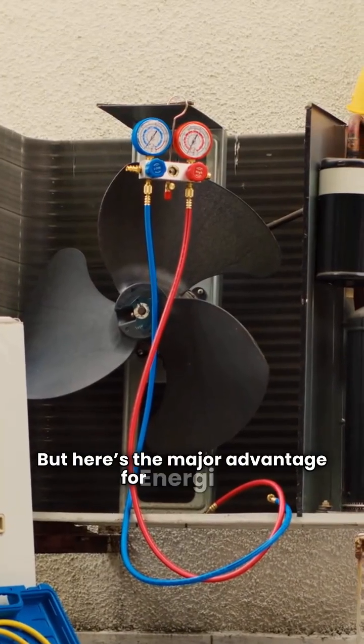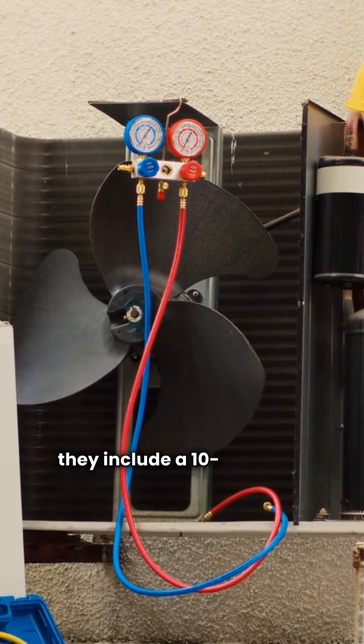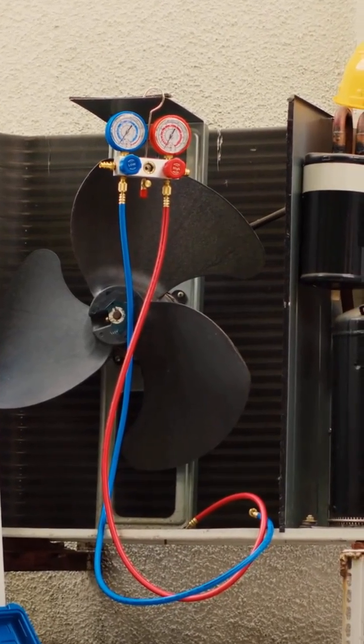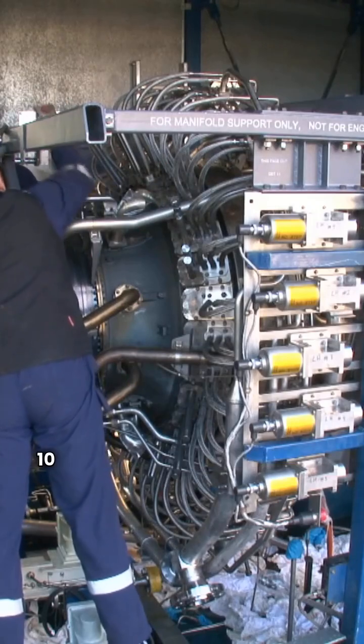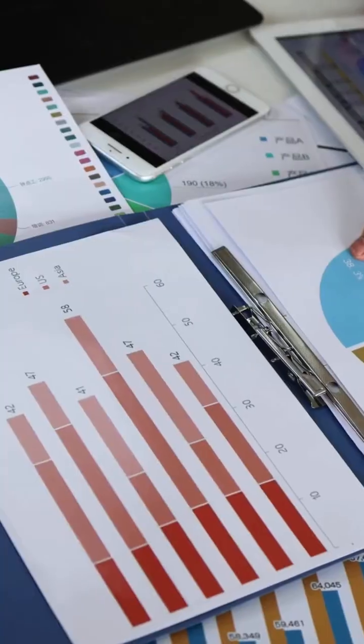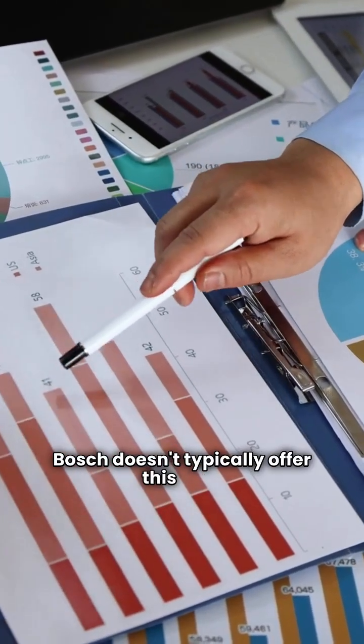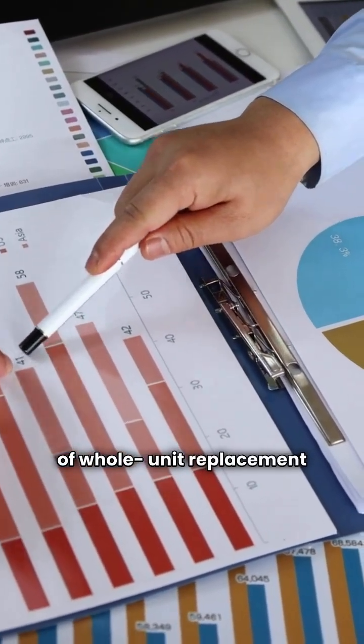But here's the major advantage for Energy Air. They include a 10-year unit replacement warranty. If the heat exchanger fails in the first 10 years, they replace the entire furnace. Bosch doesn't typically offer this type of whole unit replacement guarantee.